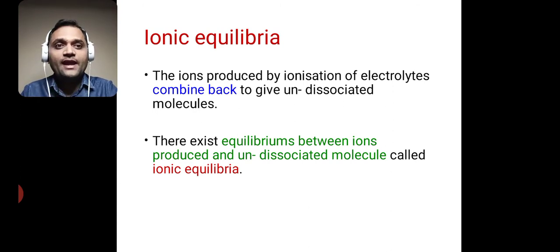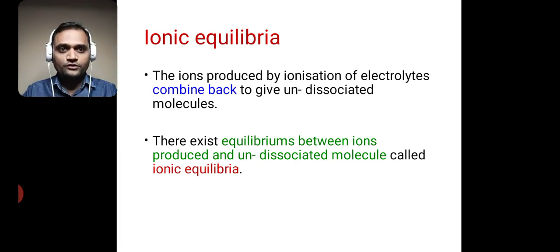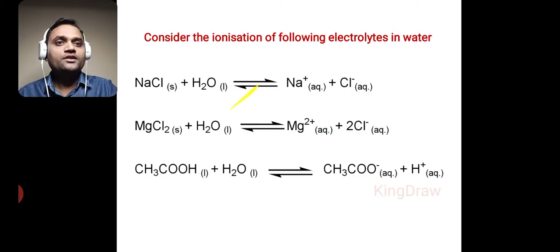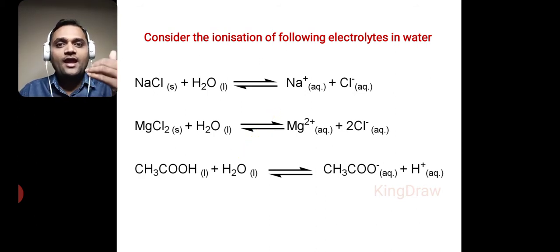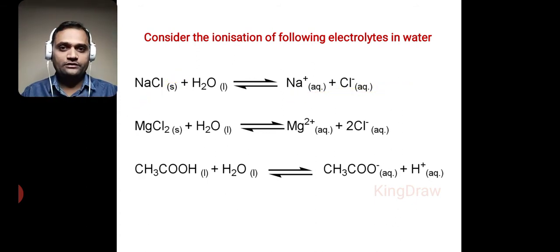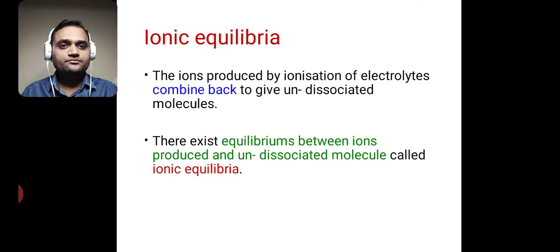The existence of equilibrium between ions produced and undissociated molecules is called ionic equilibria. This is shown by a double-headed arrow, indicating the equilibrium between the ions formed and the undissociated molecules.